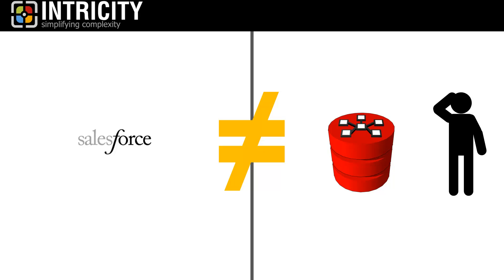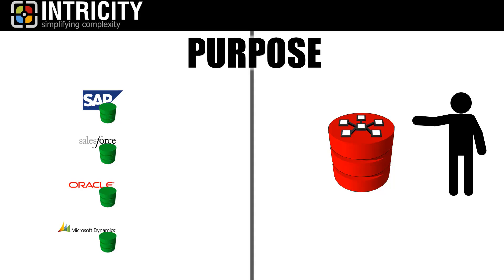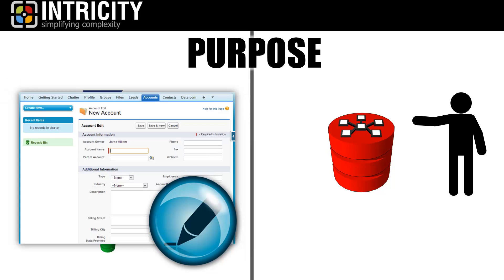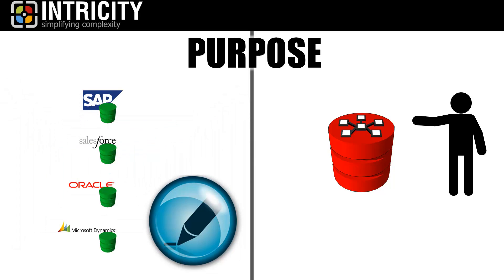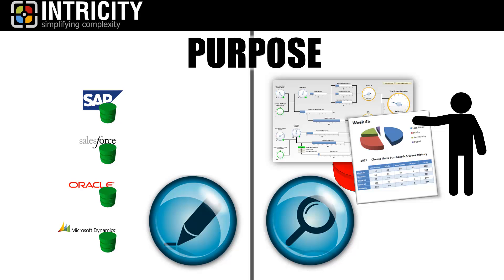The first distinction I want to point out is one of purpose. A transaction system like Salesforce.com or Microsoft Dynamics is designed to write data. In other words, it provides an effective interface to enable you to create information about a customer or a product. A data warehouse, on the other hand, is purpose-built for reading data. This means that it is designed to help you see what is going on with your organization by turning your raw data into information.